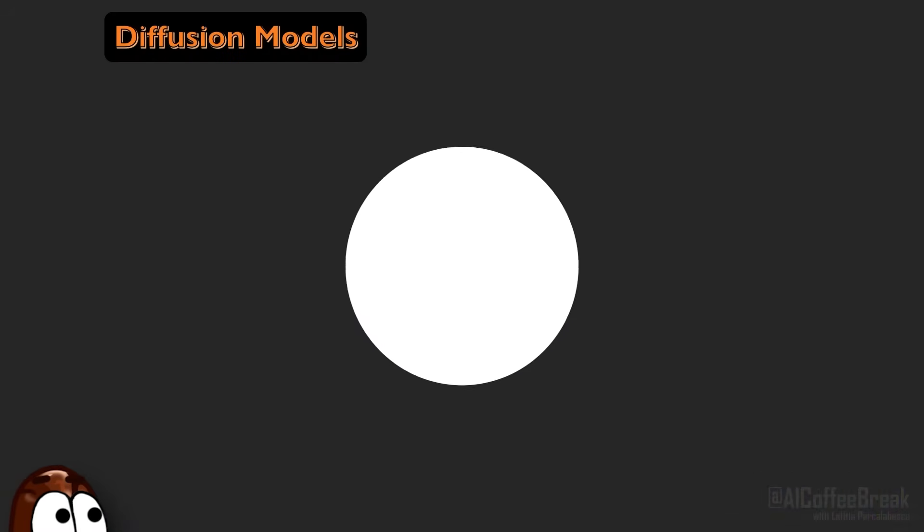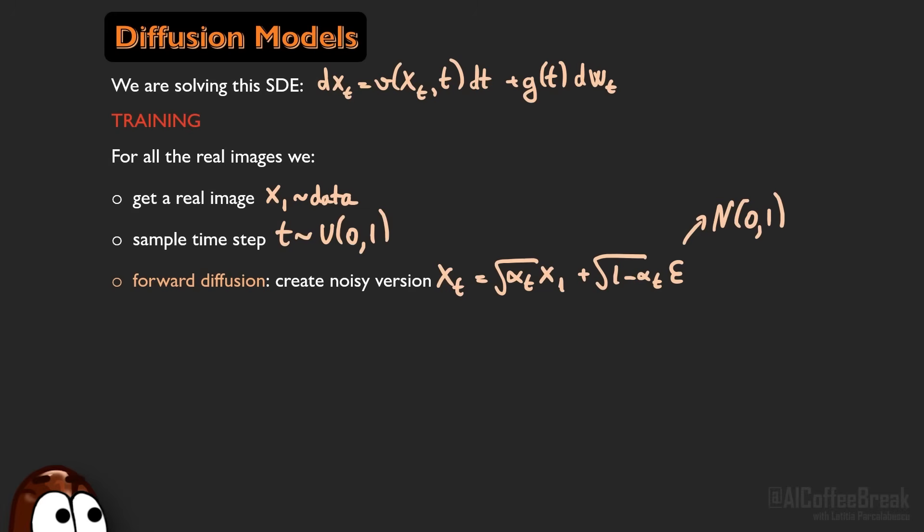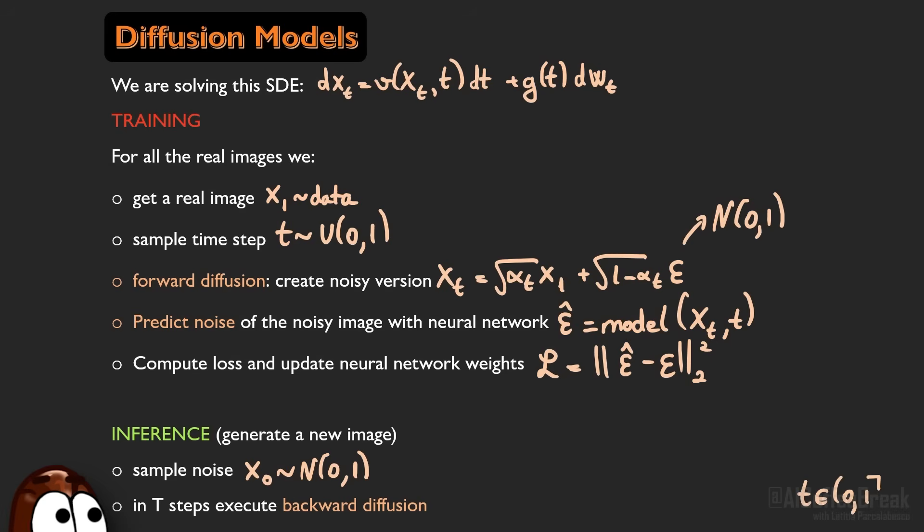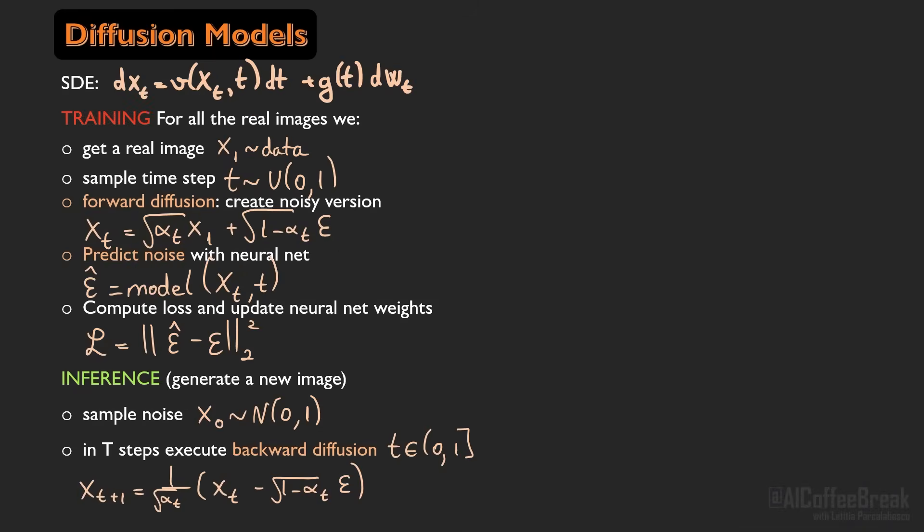So to recap, here are the training and inference loops for a diffusion model. Diffusion models learn to reverse a noising process described by this stochastic differential equation. During training, we take a real image, sample a random time step, add Gaussian noise according to a schedule corresponding to the sampled time step, and teach a model, a neural network, to predict exactly that noise. The model is trained with a simple L2 loss between the predicted and true noise. Then, at inference time, to generate new images, we start from pure noise and iteratively apply the model in reverse. Each step slightly denoises the image, until we end up with a realistic sample at t equals one. And if you want to know how to generate images from text, watch our previous videos on this. Okay, so far so good it was for diffusion models.